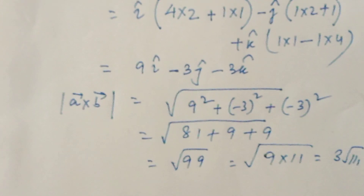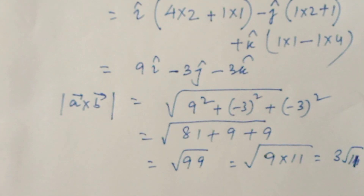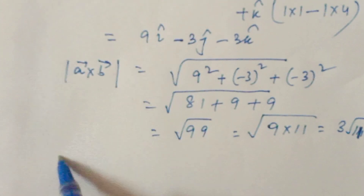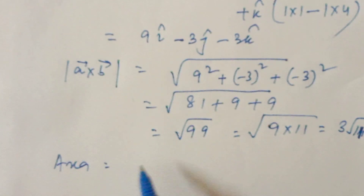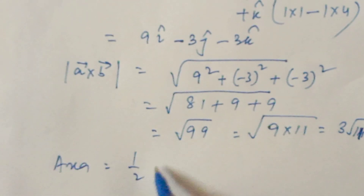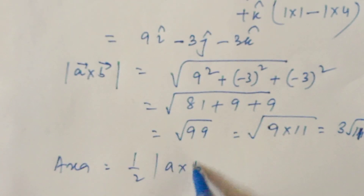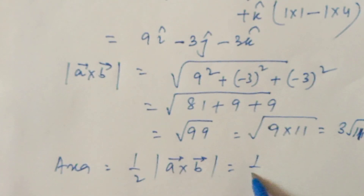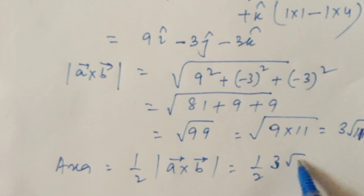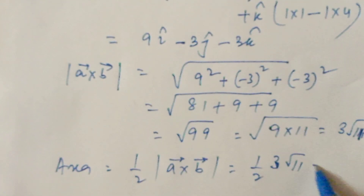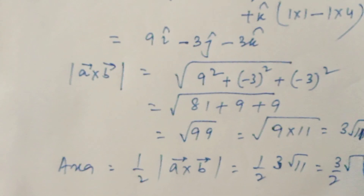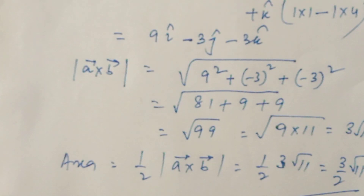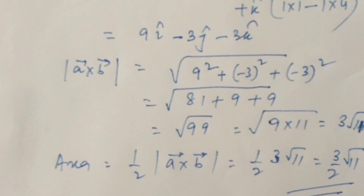So the magnitude of a cross b is 3 root 11. Now the area of the triangle is half times the magnitude of a cross b, which is half times 3 root 11. So the area is 3 by 2 times root 11. This is the answer.